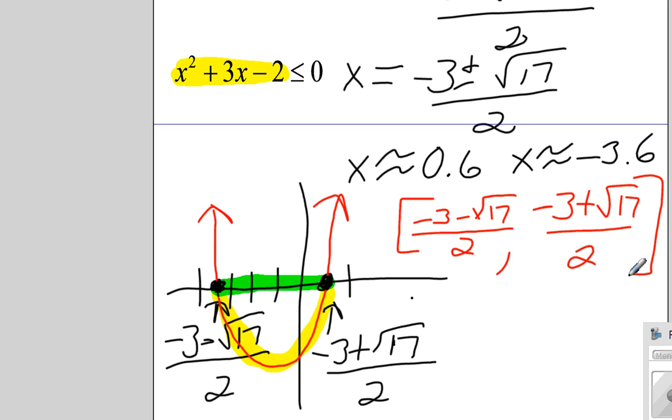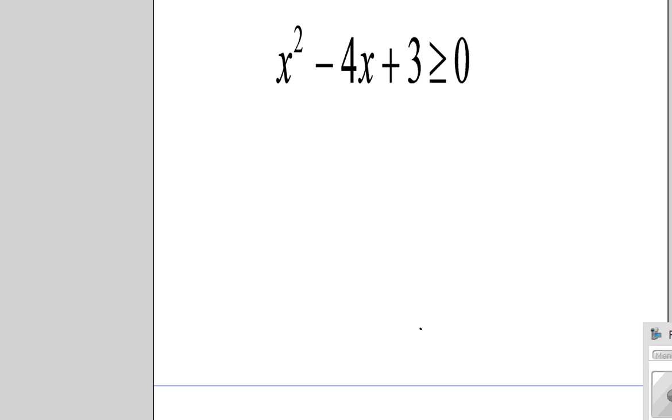All right, we're going to try another one. Here's the next problem. And again, wouldn't it be lovely if this was factorable? All right, so let's look. Are there factors of 3 whose sum is negative 4? Oh, wonderful. Negative 3 and negative 1 add to negative 4 but multiply to positive 3. So let's factor this.